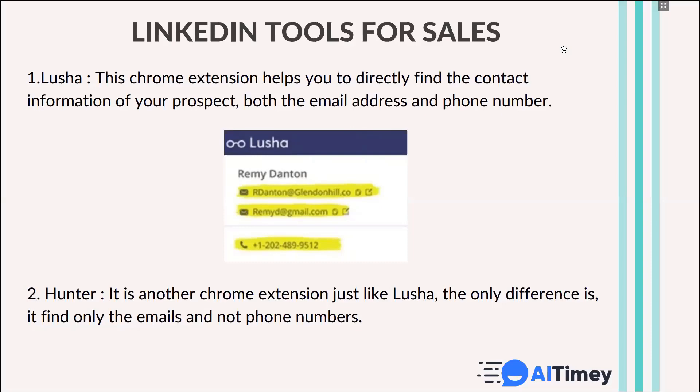The next LinkedIn tool is Hunter. It is also a similar extension just like Lusha, but the only difference is Lusha gives you the phone number as well, whereas Hunter just gives you the email address. So if you want to do cold emailing, you can use Hunter, or you can use both — it's all up to you.